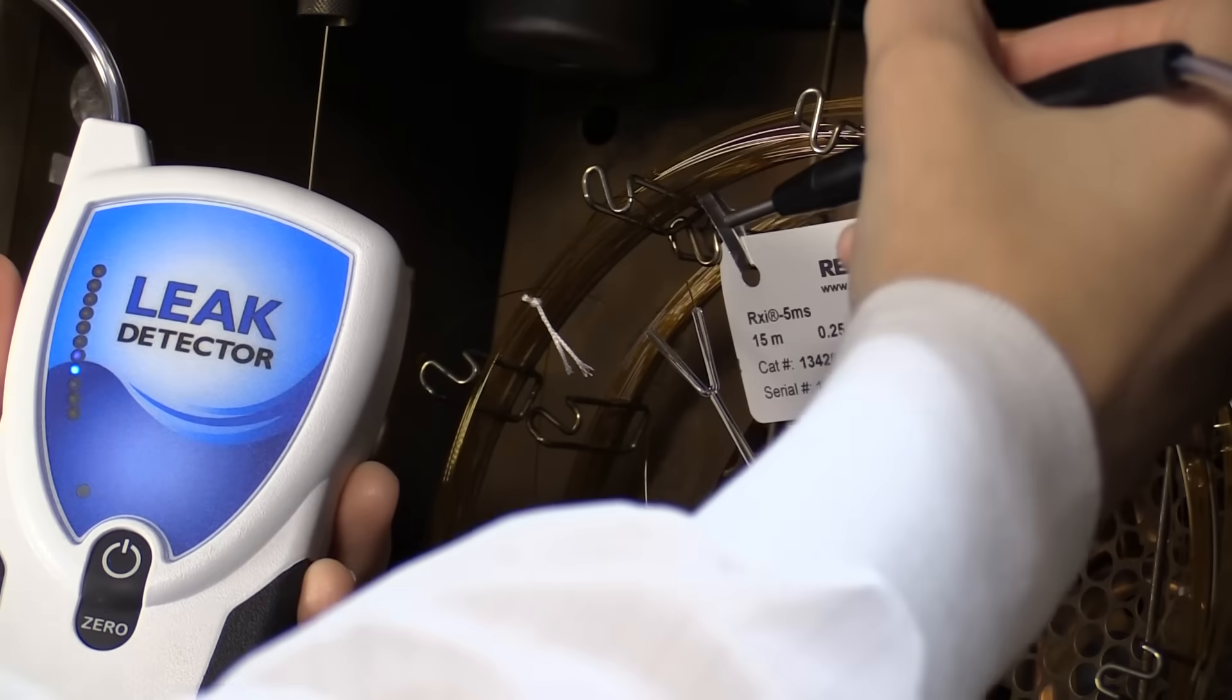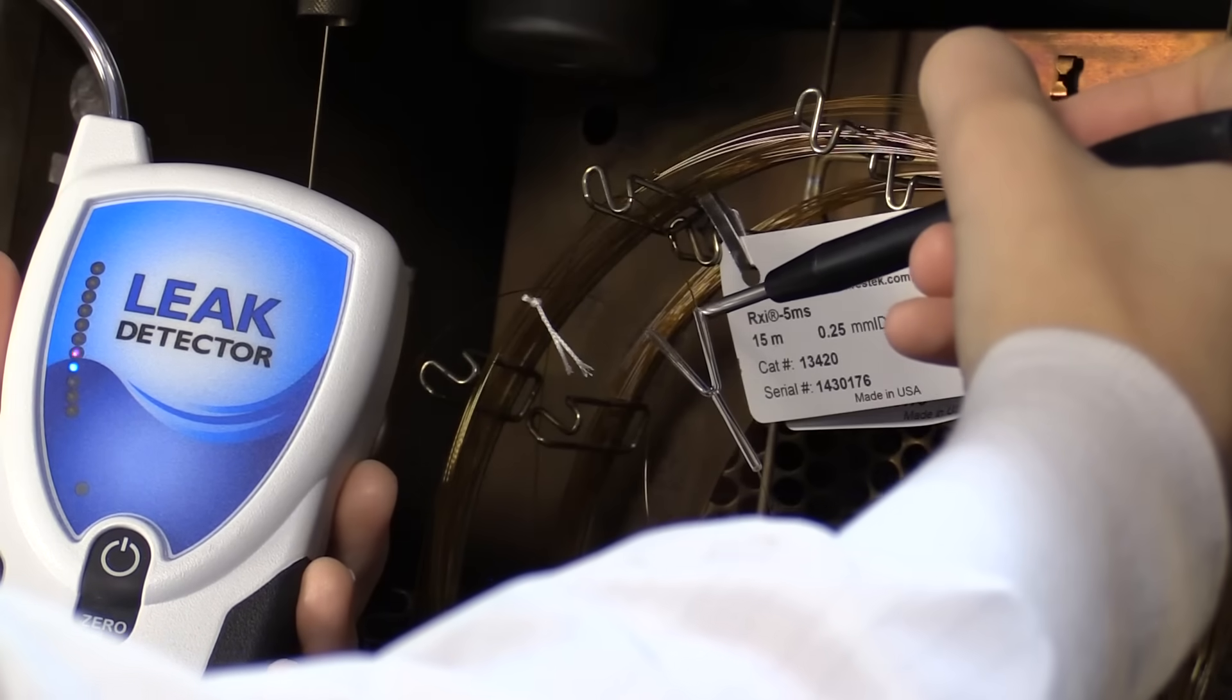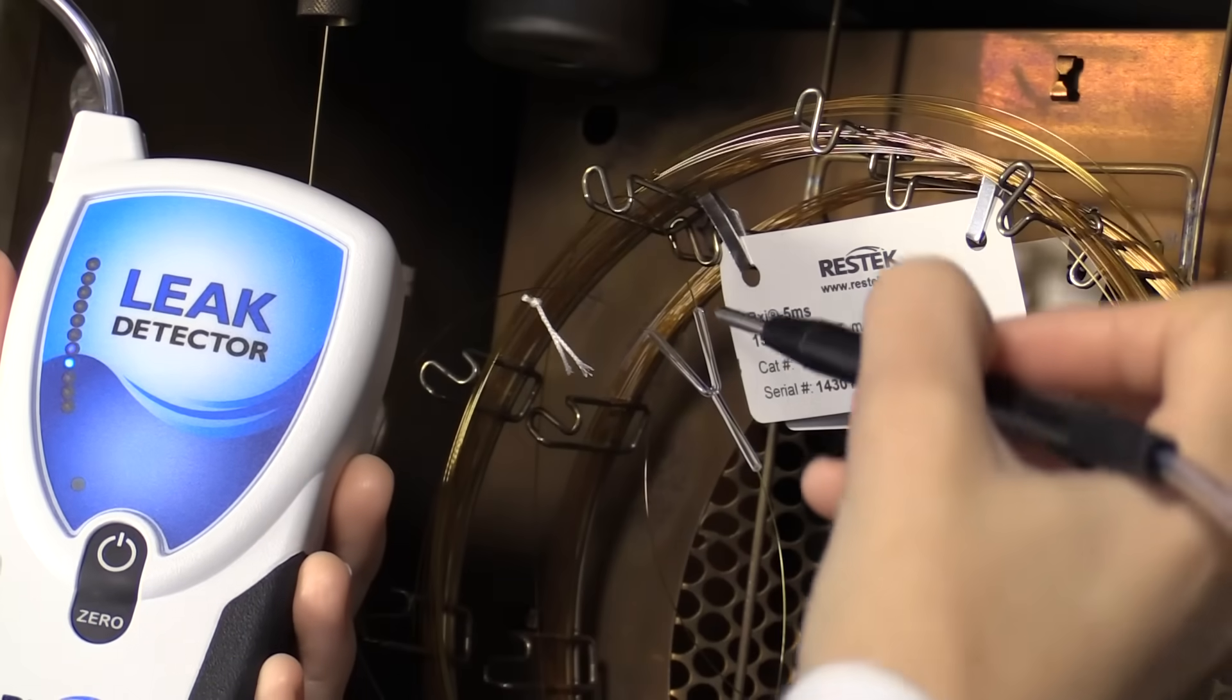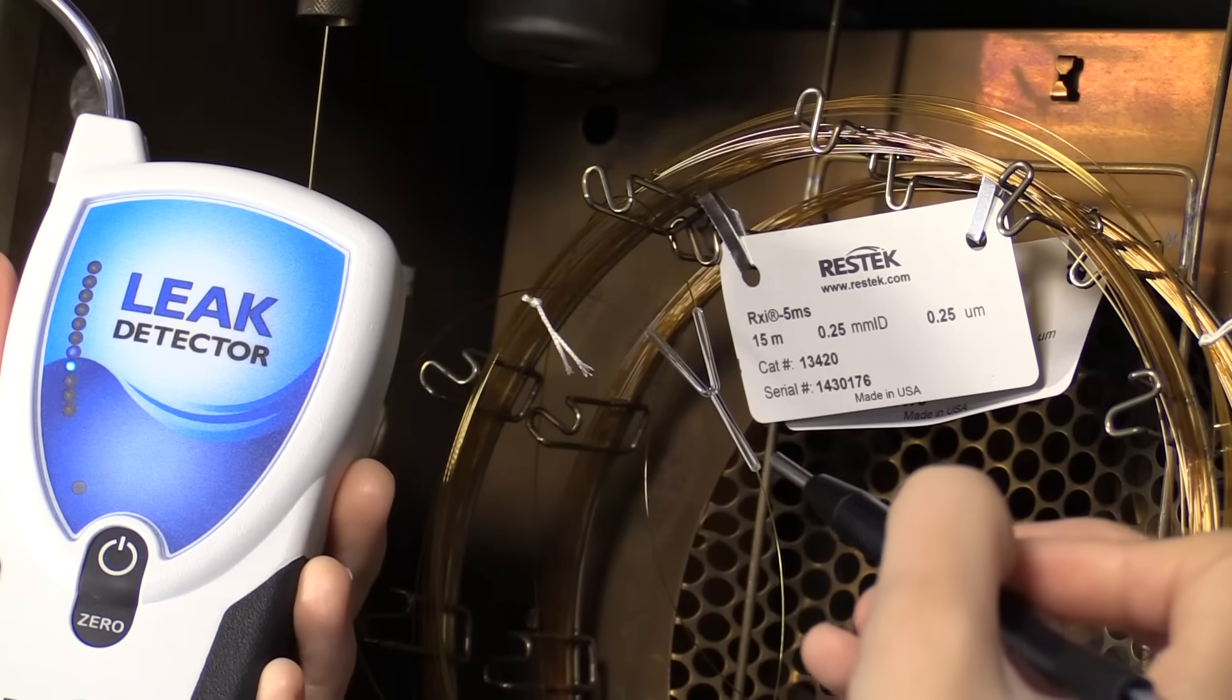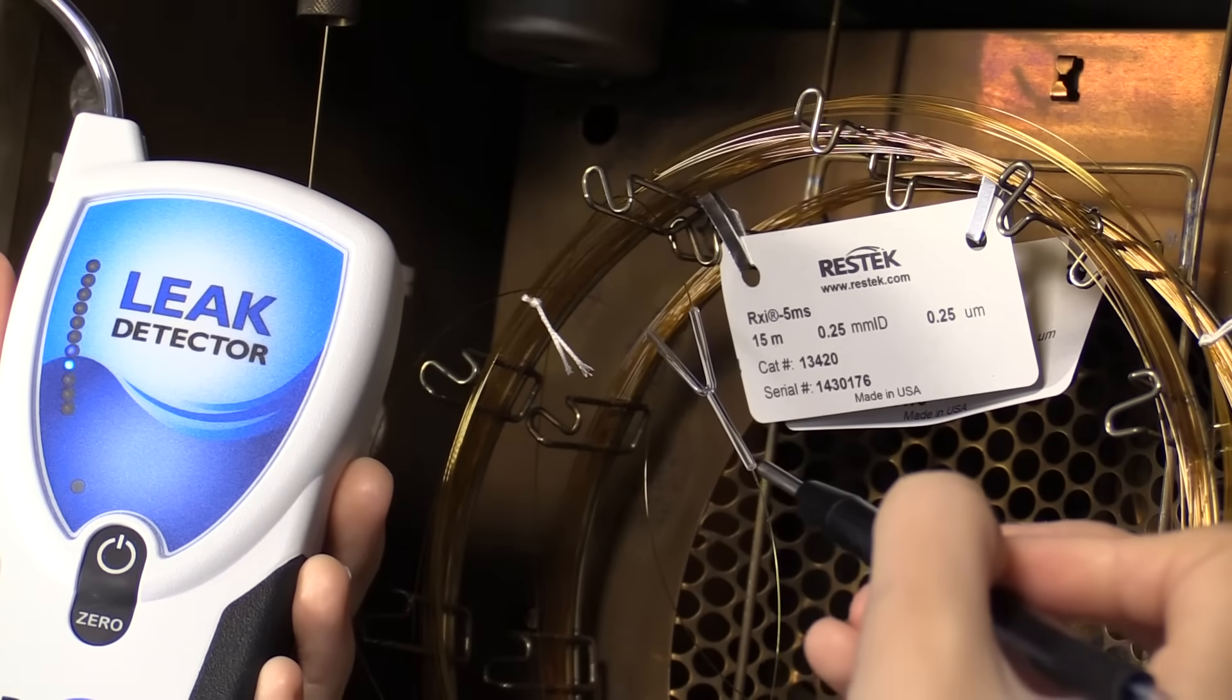Column connectors are common sources for leaks, even if they are leak-free after initial installation. Check them regularly during use. Reinstallation may be necessary if you discover a leak.